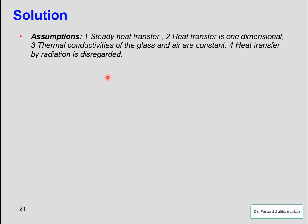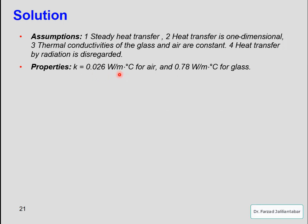Now let's note the properties. We have the thermal conductivity of the air between the two glasses of the double pane windows, which is 0.026 watt per meter degree Celsius, and the thermal conductivity of glass, which is 0.78 watt per meter degree Celsius.